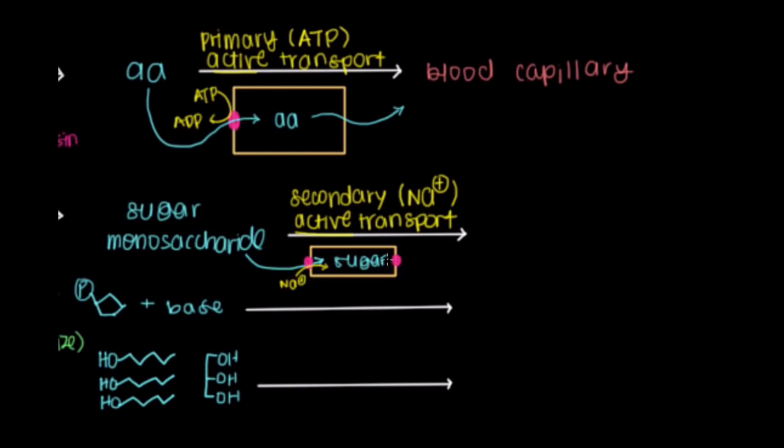And sort of the same thing happens on the other side, except as the sugar leaves, sodium on this side is entering. So the sodium is still flowing down its concentration gradient, but it ends up inside the enterocyte while the sugar leaves and goes to the blood capillary. So this also ends up in our bloodstream and can go anywhere in the body to be used.